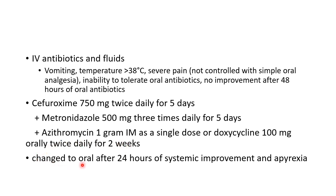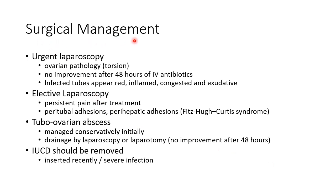The IV regimen can be changed to oral antibiotics after 24 hours of systemic improvement and apyrexia. Urgent laparoscopy is indicated if there is suspicion of ovarian torsion or no improvement after 48 hours of IV antibiotics — at which point the infected tubes may appear red, inflamed, congested, and exudative. Elective laparoscopy is indicated for persistent pain after treatment or to rule out peritubal and perihepatic adhesions as seen in Fitz-Hugh–Curtis syndrome. Tubo-ovarian abscess is initially managed conservatively, with drainage by laparoscopy or laparotomy if no improvement after 48 hours.